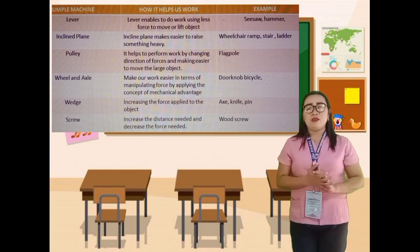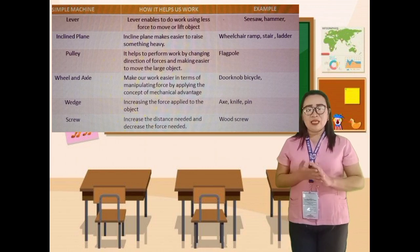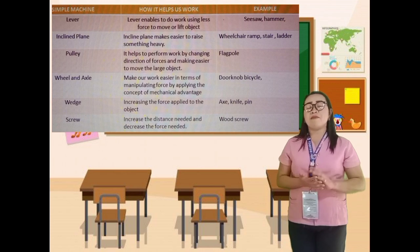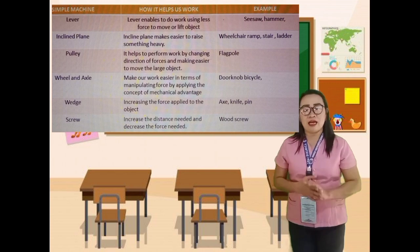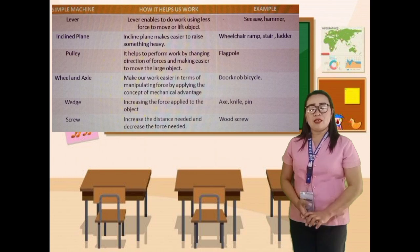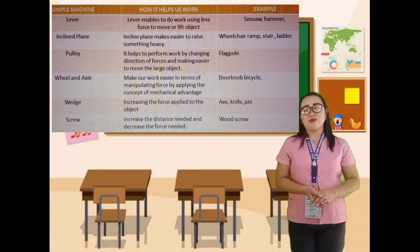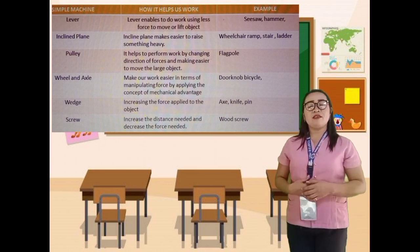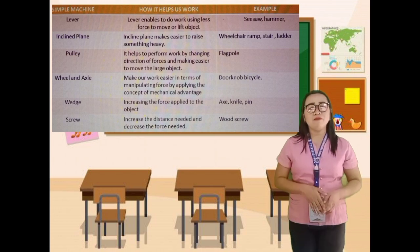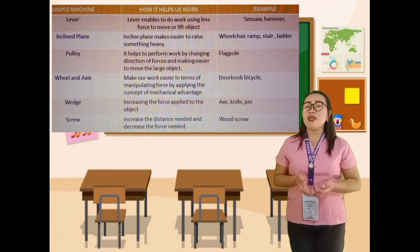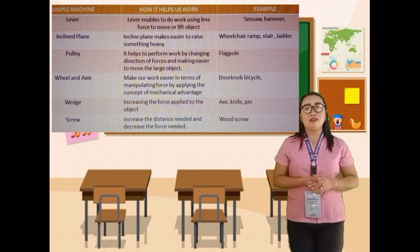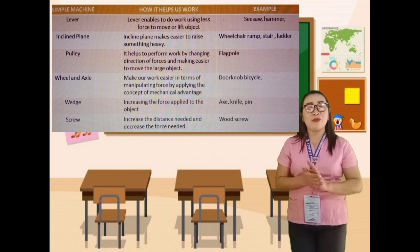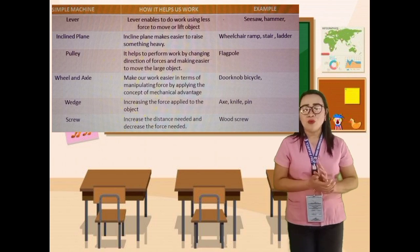Next, simple machine: Wheel and axle. How it helps us work: It makes our work easier in terms of manipulating force by applying the concept of mechanical advantage. Example: doorknob and bicycle. Next, simple machine: Wedge. How it helps us work: It decreases the force needed. Example: food knife. Next, simple machine: Screw.